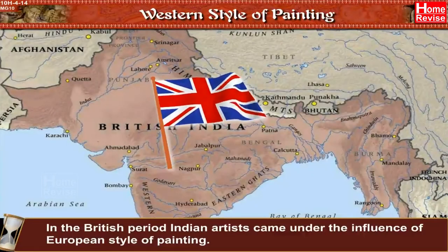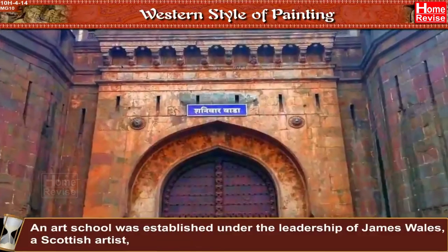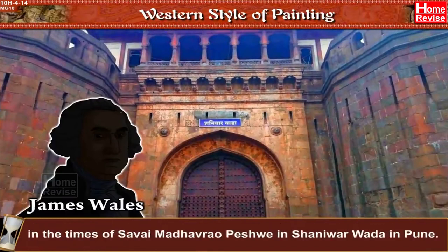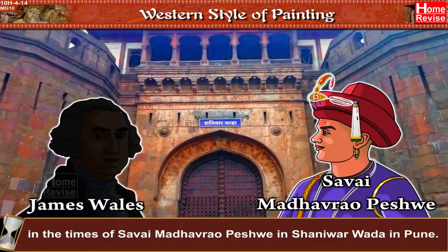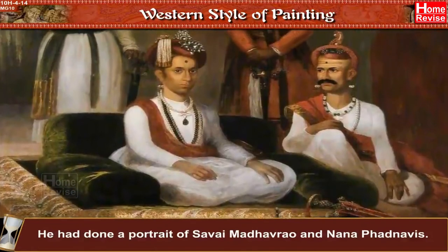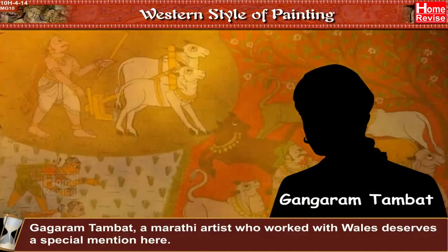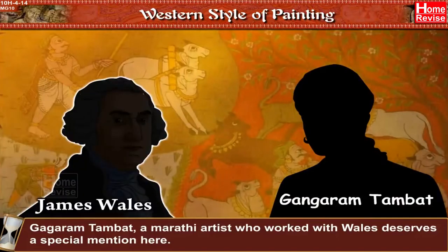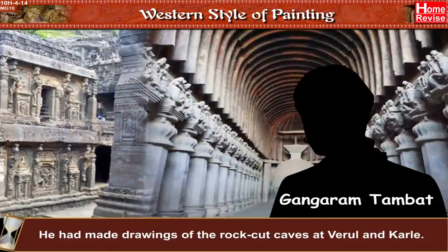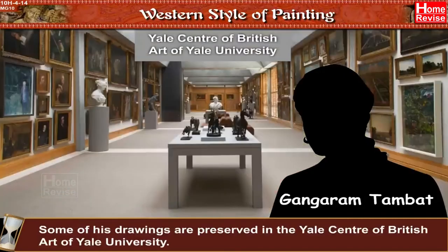In the British period, Indian artists came under the influence of the European style of painting. An art school was established under the leadership of James Wales, a Scottish artist, in the times of Sawai Madhavrao Peshwe at Shaniwar Wada in Pune. He had done portraits of Sawai Madhavrao and Nana Fadnavis. Gangaram Tambat, a Marathi artist who worked with Wales, deserves special mention; he made drawings of the rock-cut caves at Verul and Karle, some of which are preserved in the Yale Center for British Art at Yale University.